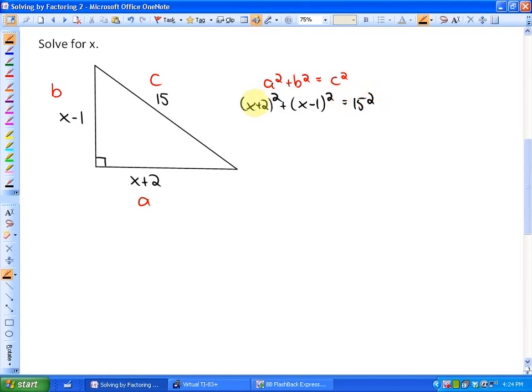This is not at the moment equal to 0, nor is it in standard form, so we're going to have to do some mathematics before we put this into standard form equal to 0. So if I do that really quickly here, we'll notice that this binomial product is x squared plus 4x plus 4. This binomial product is x squared minus 2x plus 1 equals 225.